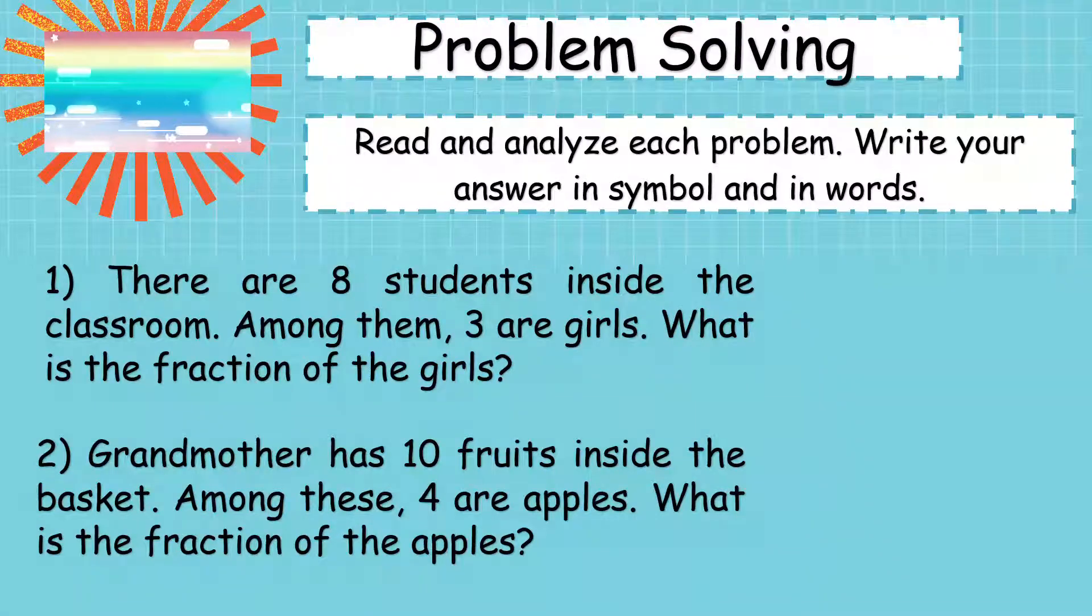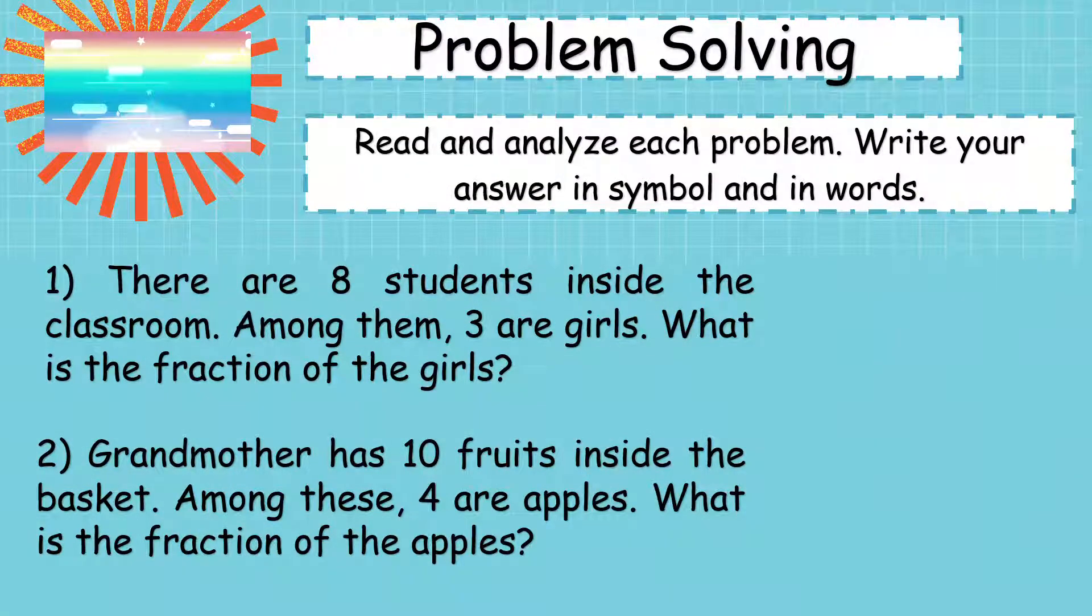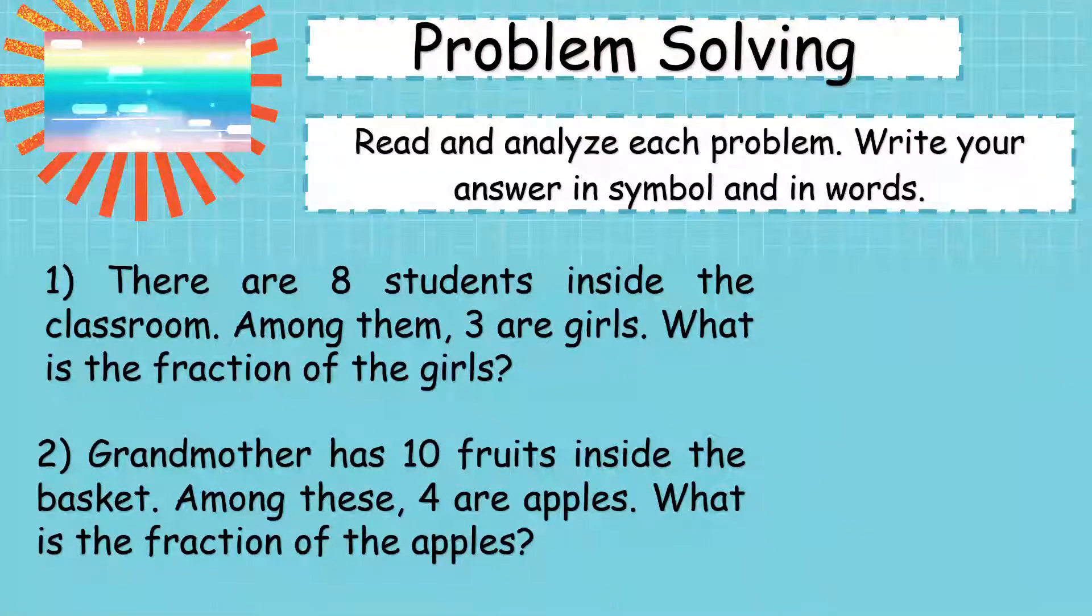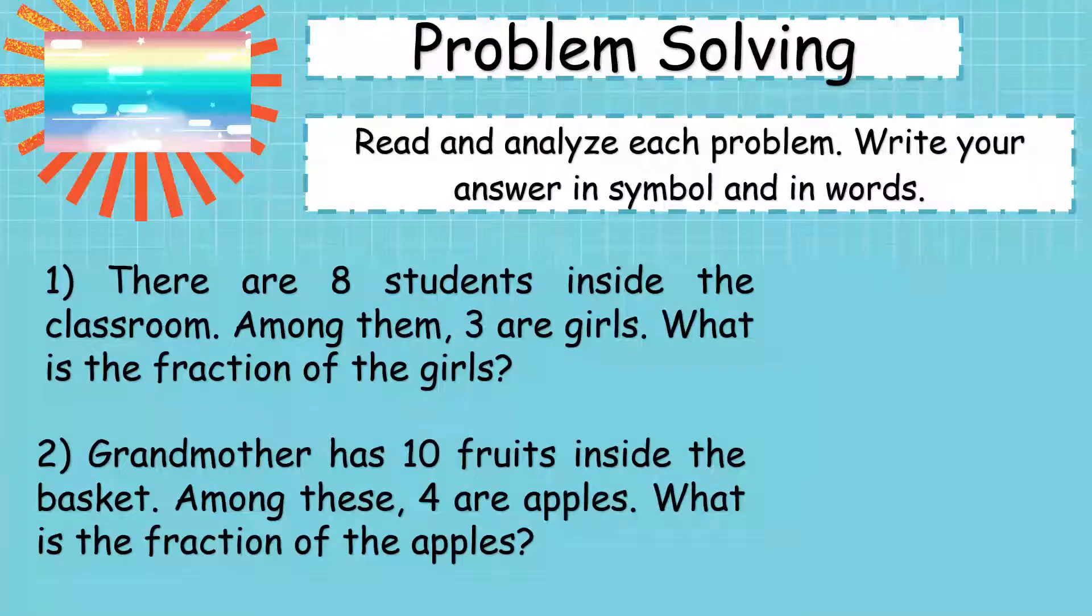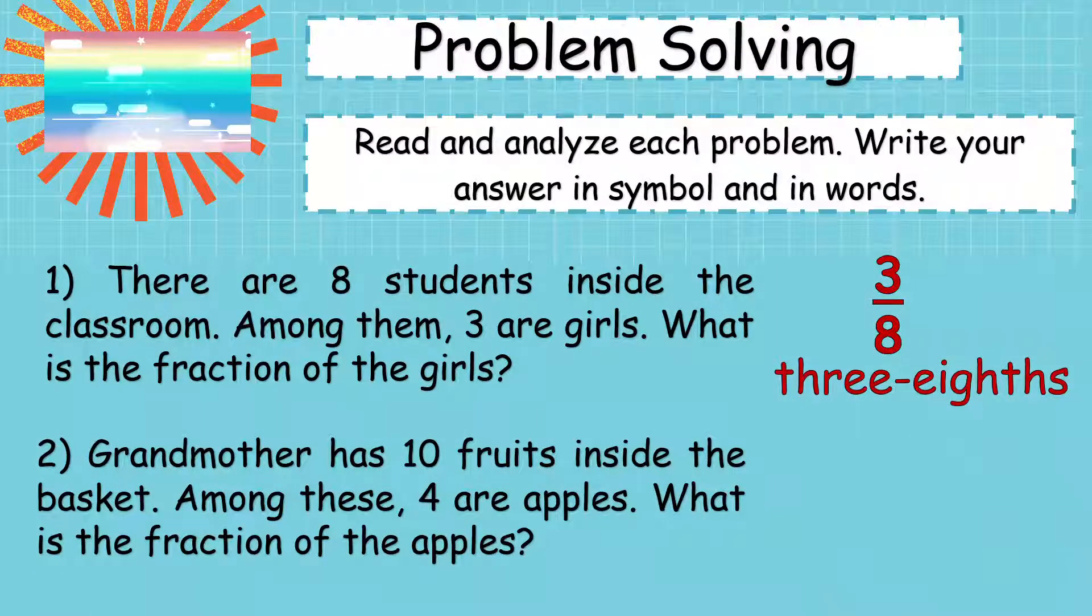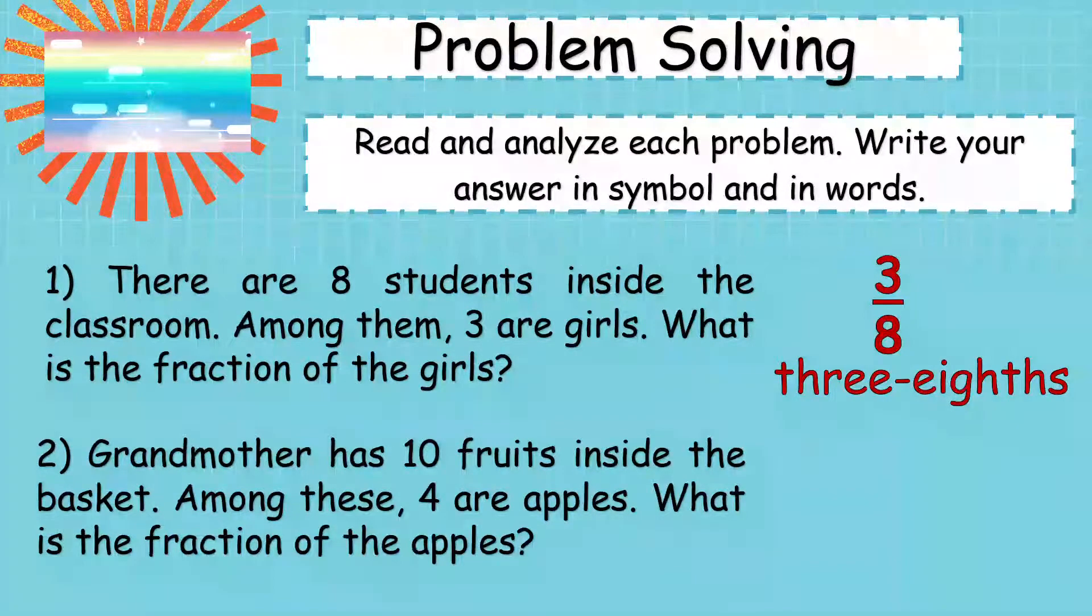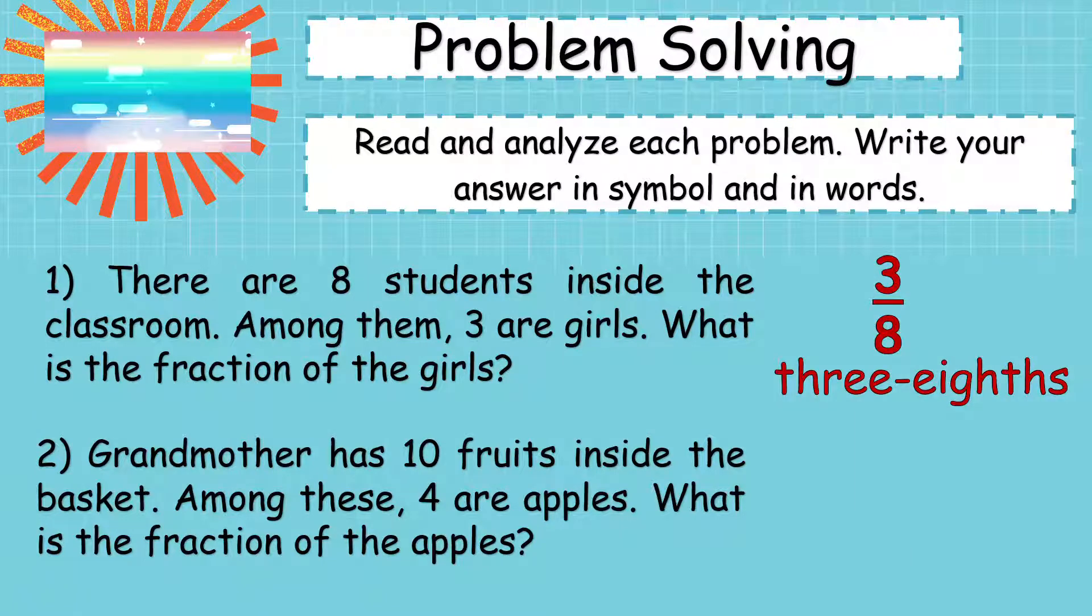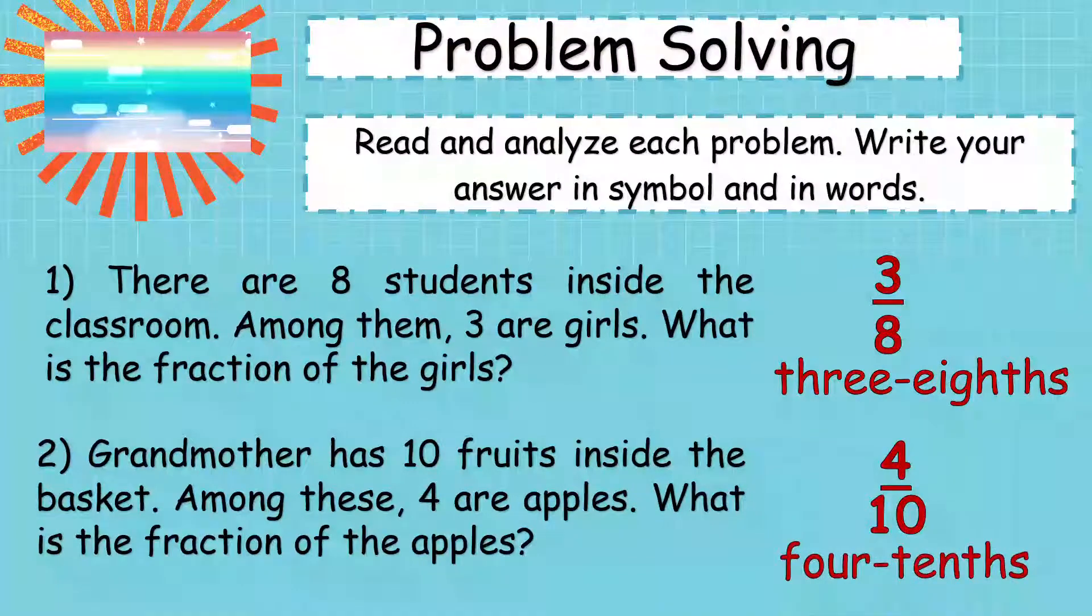All right let's see. Number one: there are eight students inside the classroom, among them three are girls. What is the fraction of the girls? All right, yes, there are three girls, three out of eight. So we say three eighths. Good job. Next: grandmother has ten fruits inside the basket, among these four are apples. What is the fraction of the apples? All right, yes, four tenths. There are four apples out of the ten fruits. Amazing children.